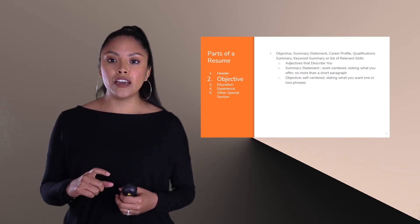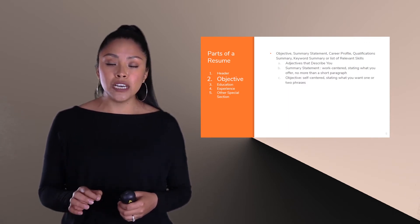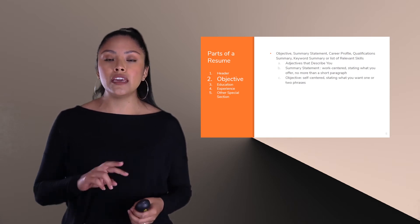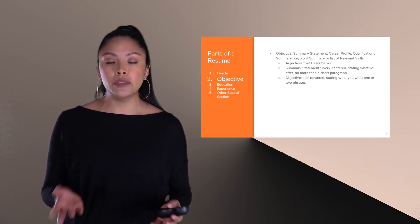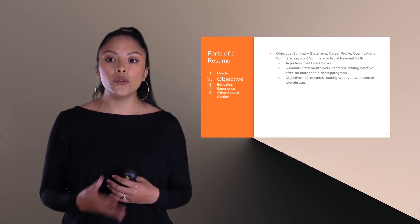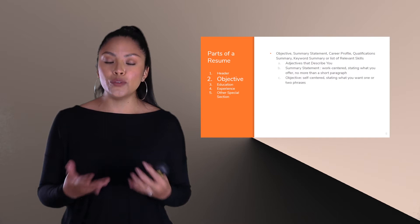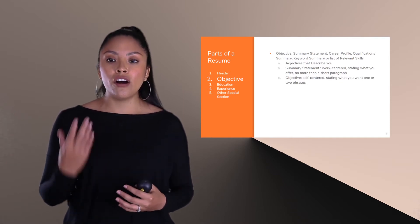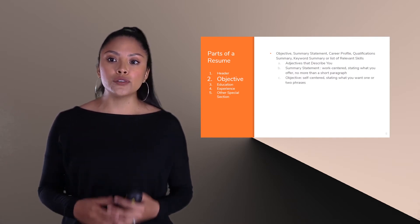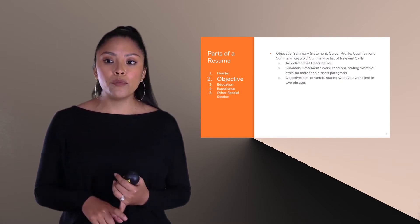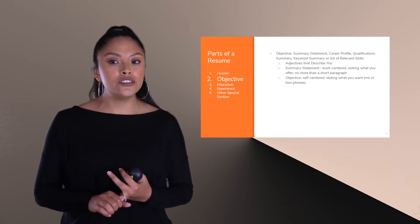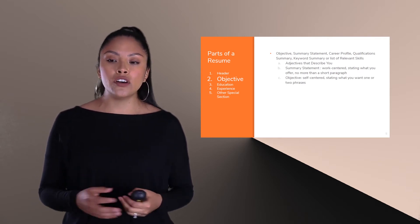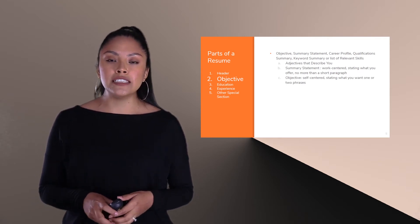For the objectives section, we'll talk about an objective and a summary statement — you can pick either one. As you're in high school those are the two to focus on. Later on you can find other options such as a career profile, qualification summary, keyword summary, or list of relevant skills, depending on your resume format.